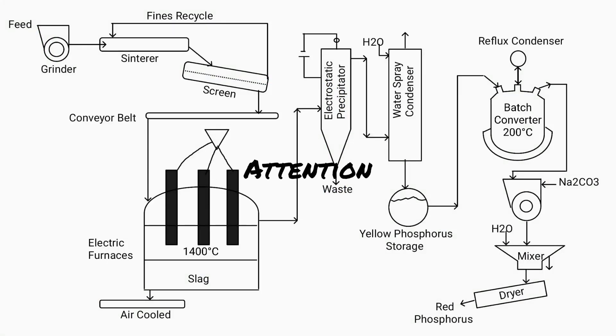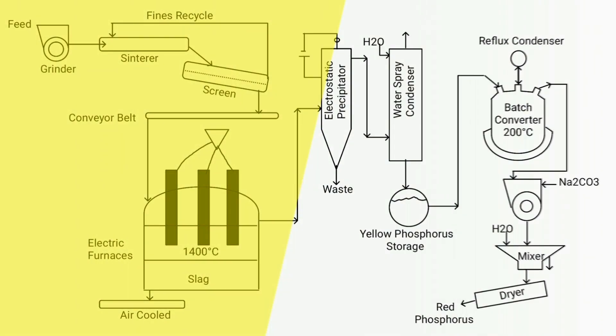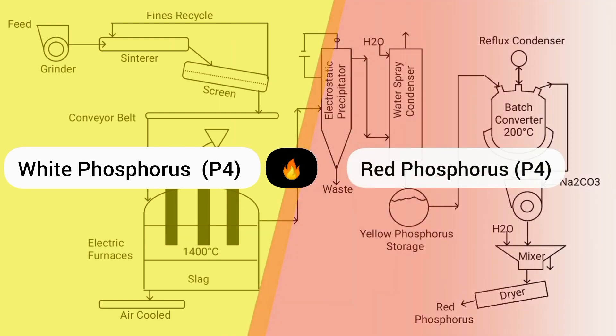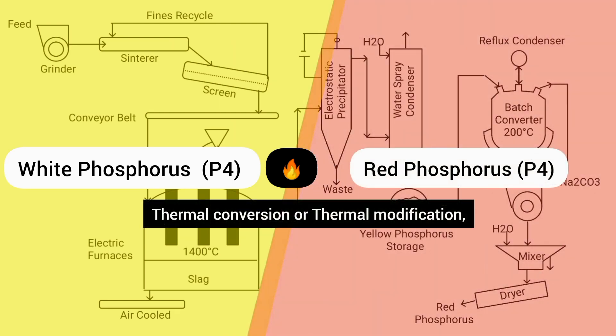Before we proceed further, it's important to clarify a common misconception about phosphorus. The commonly referred to yellow phosphorus is actually white phosphorus. However, when white phosphorus is heated, it undergoes a transformation and becomes red phosphorus. This process is known as thermal conversion or thermal modification. Red phosphorus is the most stable and less reactive form compared to white phosphorus.